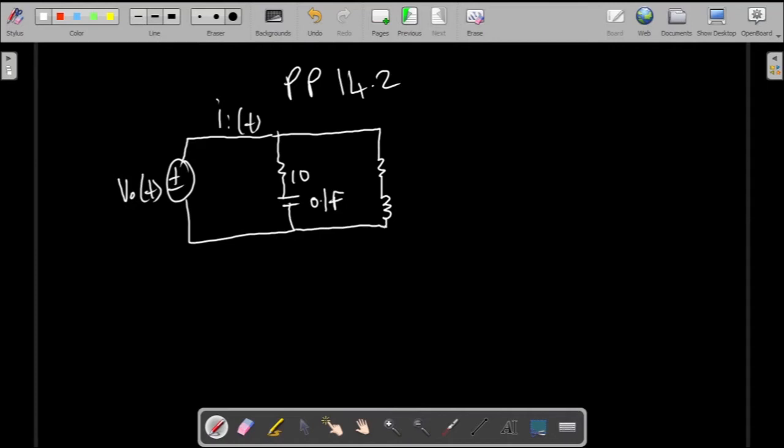This is an inductor of two Henrys, this is a six ohm resistor, and this is also a resistor. So I should find the transfer function in the frequency domain, V_O divided by I_I.